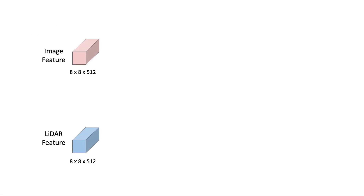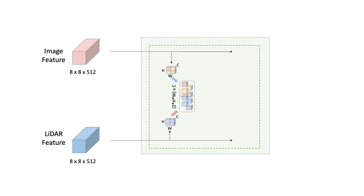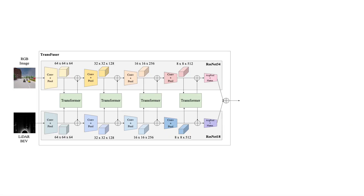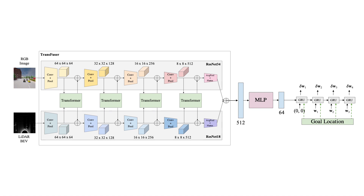We show the fusion mechanism of the image and LiDAR features at one resolution. We consider the intermediate feature maps to be a set rather than a spatial grid and treat each element of the set as a token, resulting in a 1D sequence of image and LiDAR feature tokens. These tokens are passed to a self-attention module which executes the fusion process. The output features are then reshaped into the grid form and fed back into the individual feature extractors. Transfuser outputs a feature vector which is then passed to a GRU-based autoregressive waypoint prediction network. The entire architecture is trained end-to-end using L1 loss on the predicted waypoints, which are then fed to PID controllers that output the vehicle control.